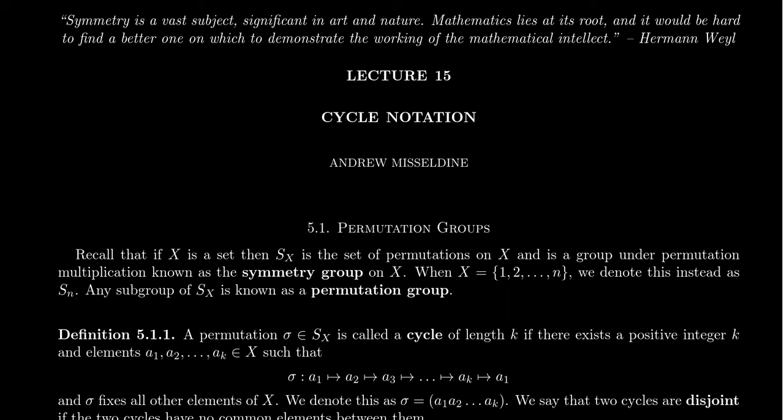Now, chapter five is all about permutation groups. What's a permutation group? Well, if you have a subgroup of S_X or S_N, whichever you want to call it, we call this a permutation group.